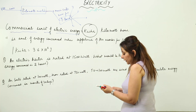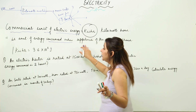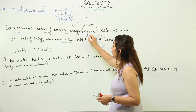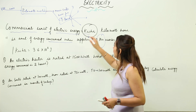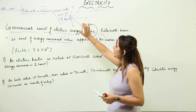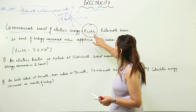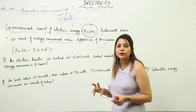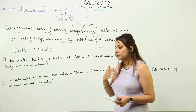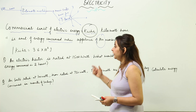Kilowatt hour means the amount of energy consumed when an appliance of 1 kilowatt works for 1 hour. Kilowatt is the power of the appliance and hour is the time. So electric energy is the amount of energy consumed when an appliance of 1 kilowatt works for 1 hour. We calculate the electric bill at home in this unit, and each unit is equal to 1 kilowatt hour.